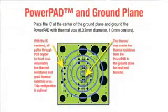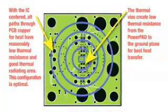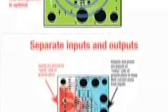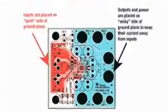In power pad devices, the ground plane acts as a heat sink. Note that heat dissipates radially. Ensure as much ground plane as possible in a radial direction, and use bottom traces near the IC in a radial direction.